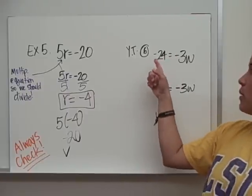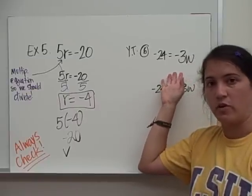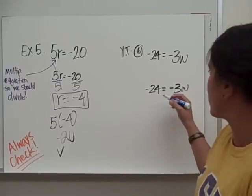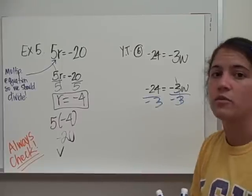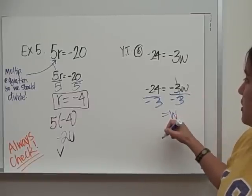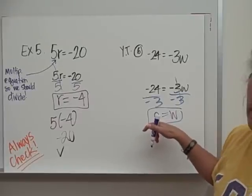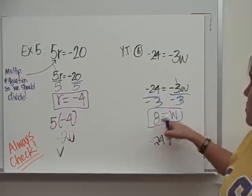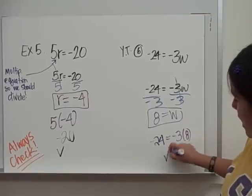You try example 6: negative 24 equals negative 3w. Pause the video and solve it on your own, then play it back when you're ready. This is multiplication, so we divide both sides by negative 3. Negative 3 divided by negative 3 is 1, leaving 1w. Negative 24 divided by negative 3 is positive 8, because a negative divided by a negative is a positive. So w equals 8. Checking: negative 3 times 8 is negative 24. That checks out.